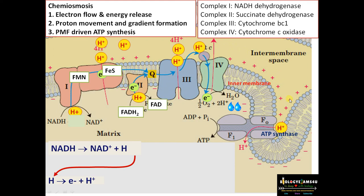The cell has a tendency to make an equilibrium, to neutralize this charge difference or proton gradient. So H+ has a tendency to move out to the matrix. The only way out is through ATP synthase, the enzyme involved in ATP synthesis.